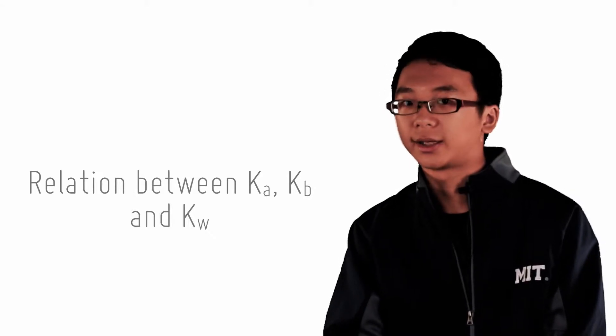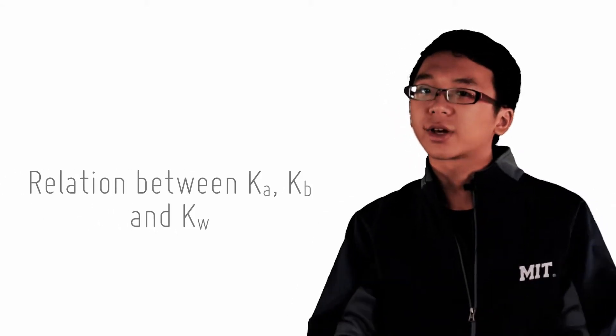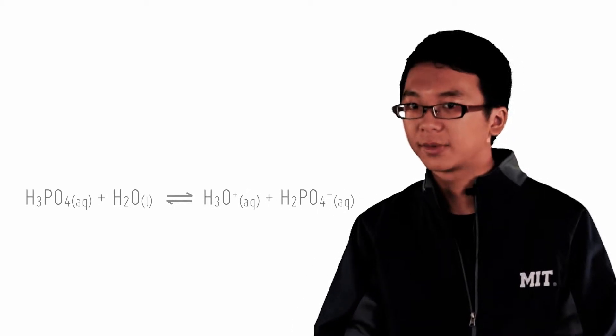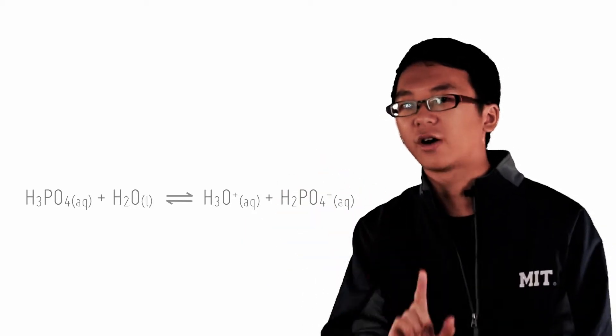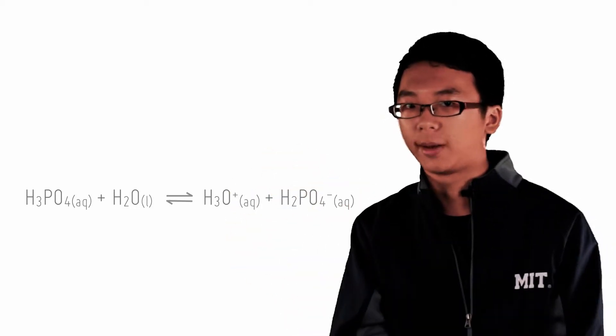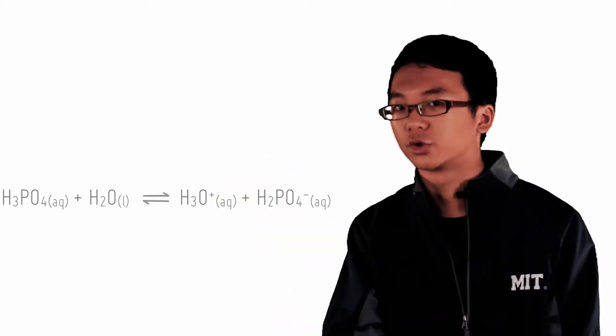Here we will look at how Ka, Kb, and Kw are related. Let us look at the dissociation of phosphoric acid. Phosphoric acid is a weak acid, by the way. So here we are discussing the reactions of phosphoric acid, and this is the reaction of it dissociating into its conjugate base. The reverse reaction is also shown as well.